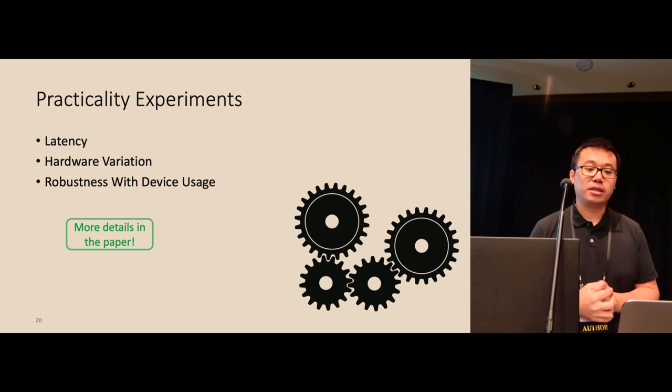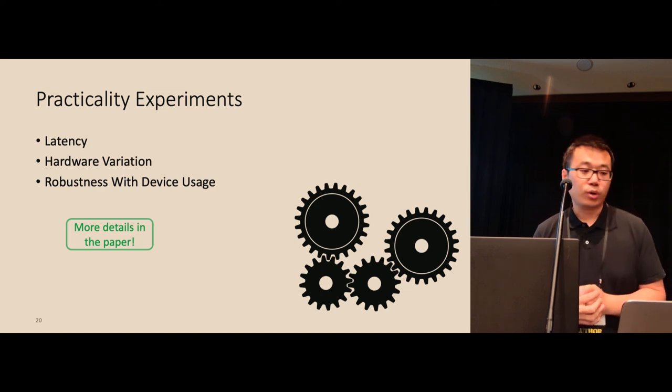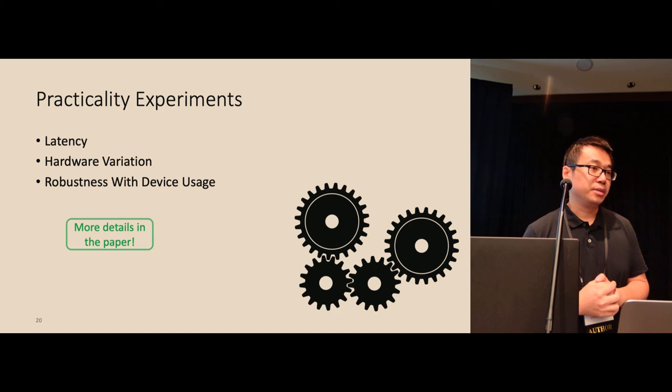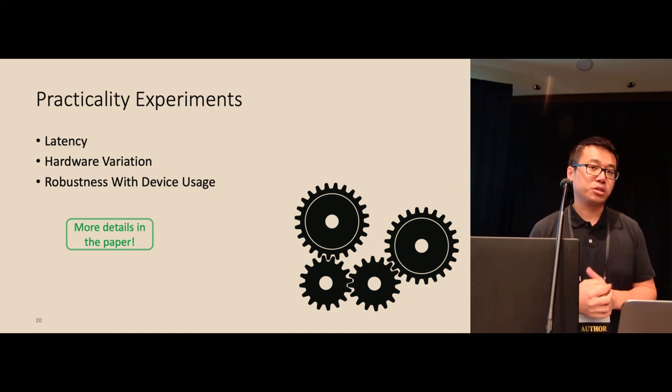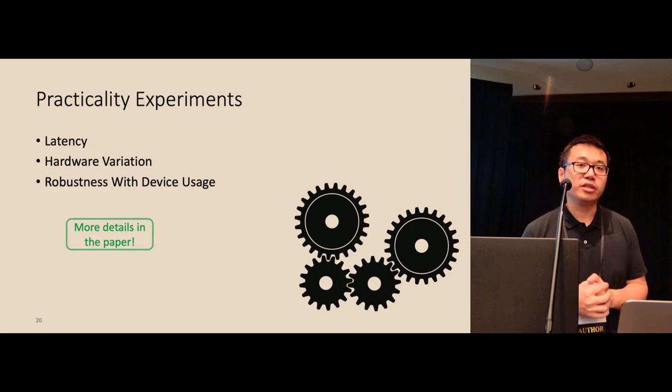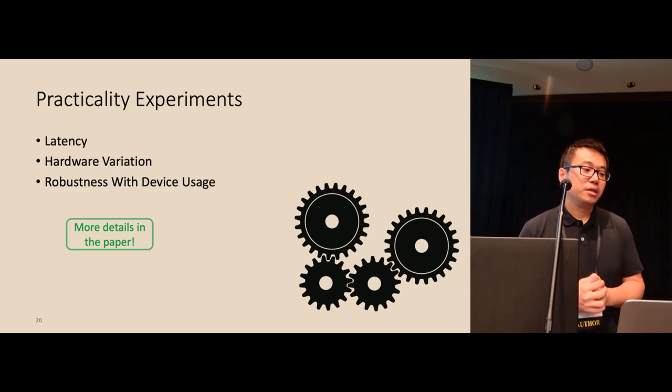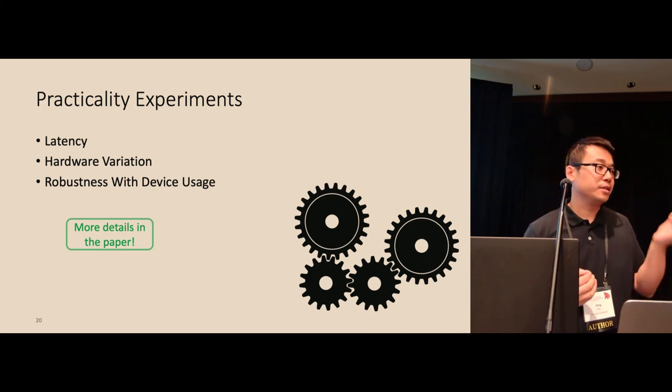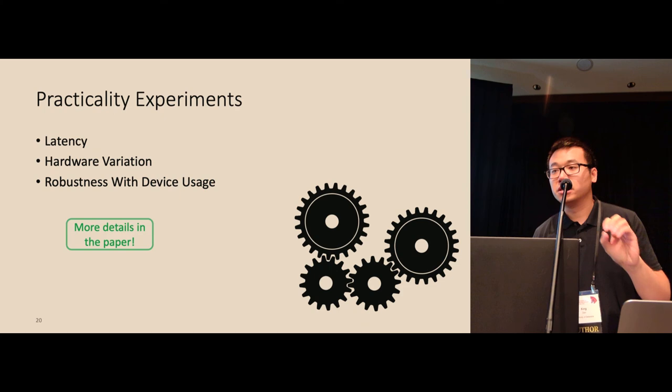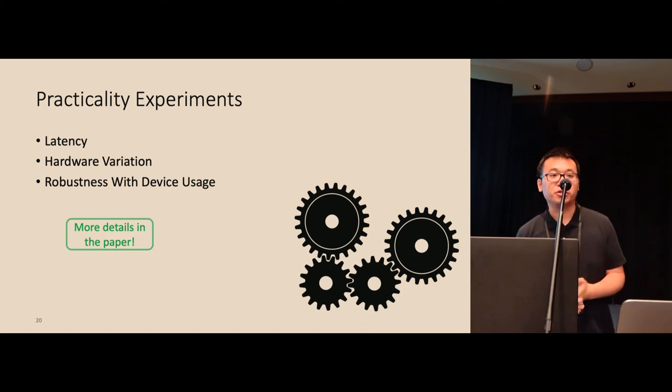We have also looked at some practical experiments, especially focusing on latency and its relation to user impact. We also tested the impact of hardware variation like different ports, different hubs, and even different hosts. We have also discussed the robustness with device usage, basically how writing to a device can affect the fingerprint accuracy. For more details, please refer to our paper.